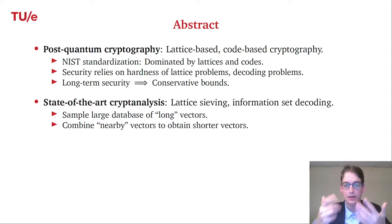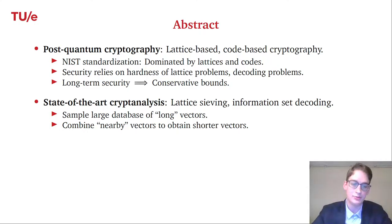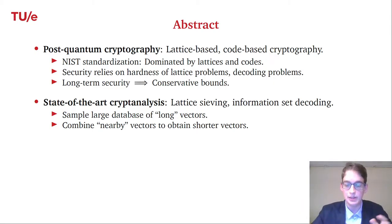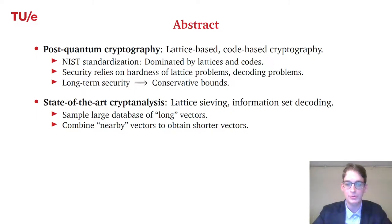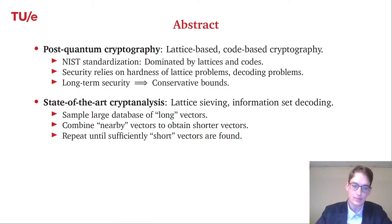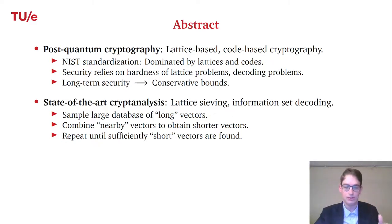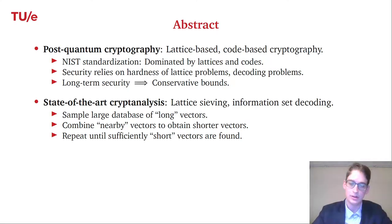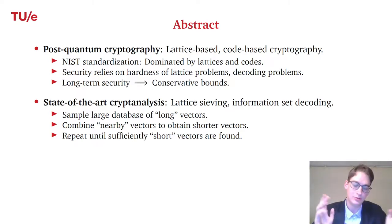We then combine nearby vectors to obtain shorter vectors. We search for pairs of vectors that we can combine — say by adding or subtracting them — so that we get a shorter vector. We can only combine vectors which are nearby in space under the same metric. We repeat this combining step until we have many short vectors, iteratively finding shorter and shorter vectors until, for instance, we can solve the shortest vector problem.